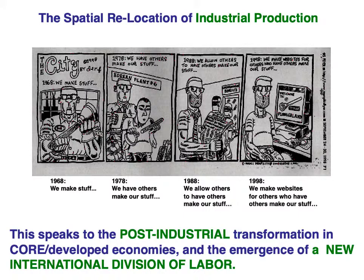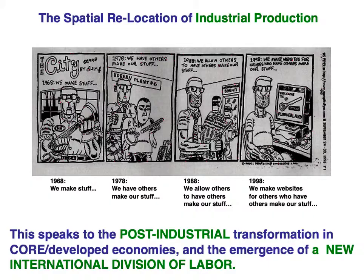Nike spends roughly $3 billion a year on marketing costs because that's its core product — it produces images and meanings through marketing. This post-industrial transformation has a real knock-on effect for the spatial relocation of industry. The post-industrial corporation focuses on demand creation rather than material creation. As the saying goes: 1968 — we make stuff; 1978 — we have others make our stuff; 1988 — we allow others to have others make our stuff; and today — we make websites for others who have others make our stuff.